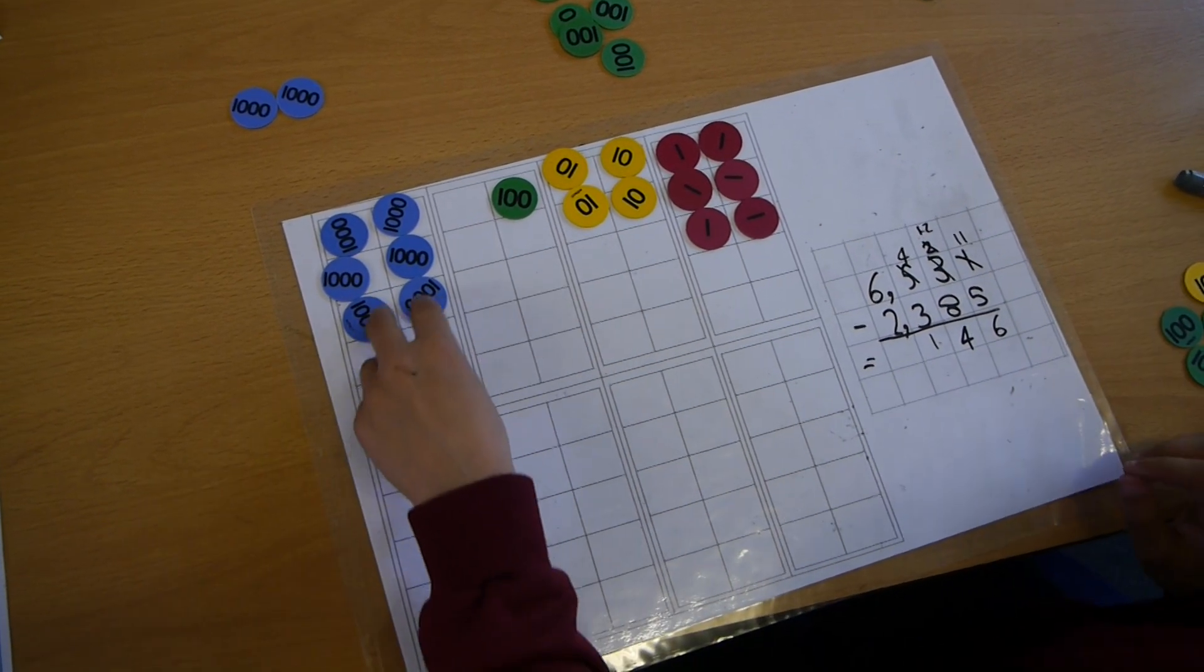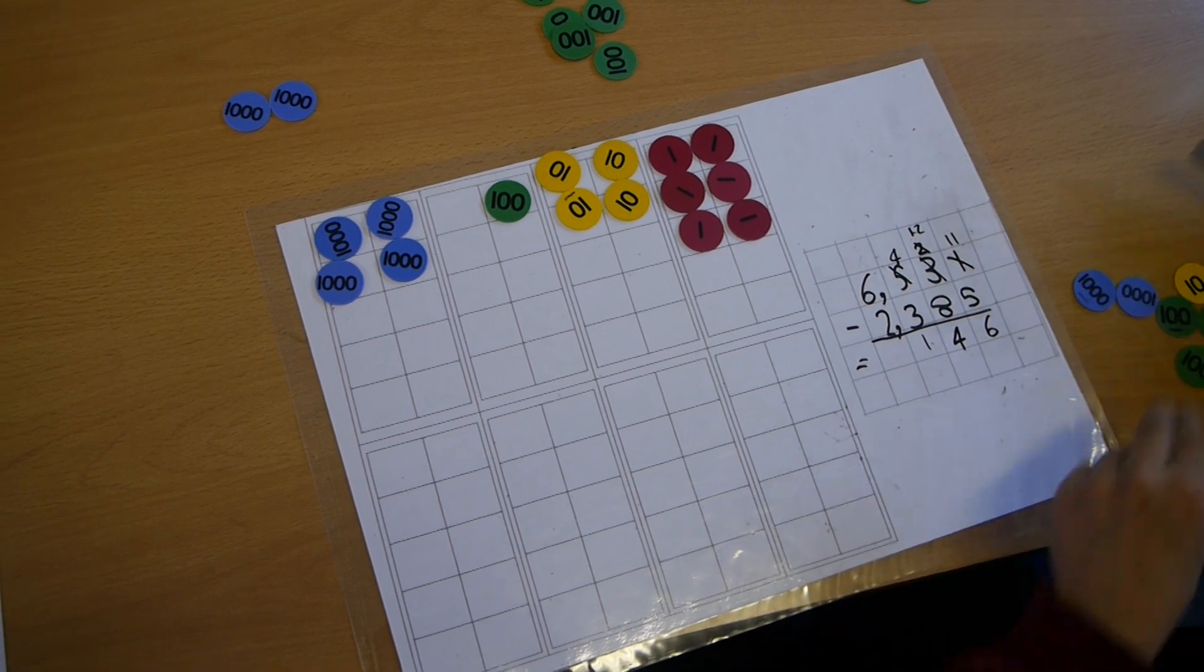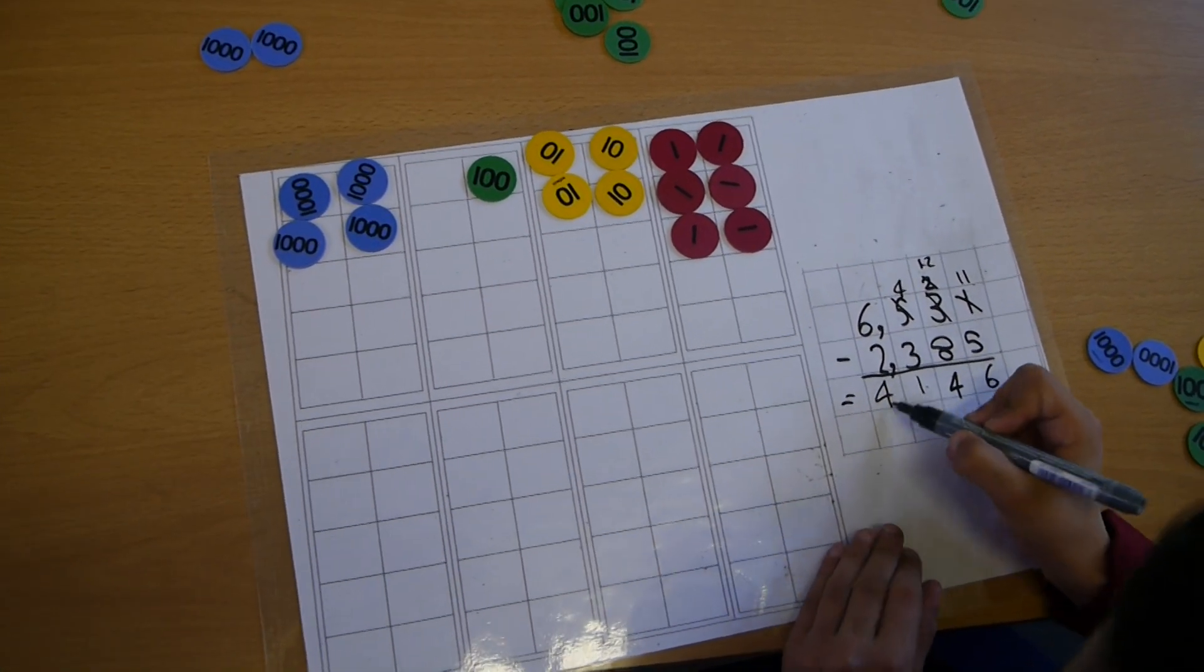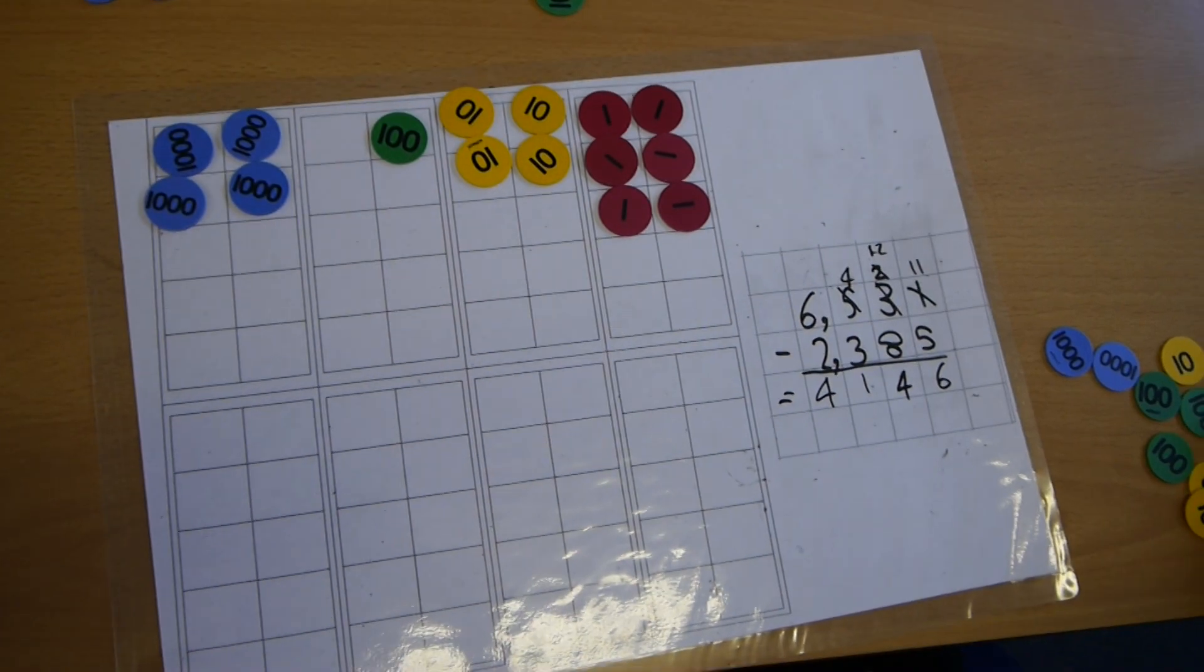Now we need to take away 2000, which is not a problem. Now we've got 4000. So the answer is 4146.